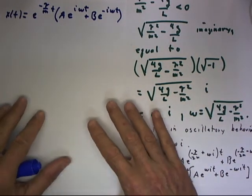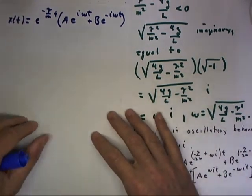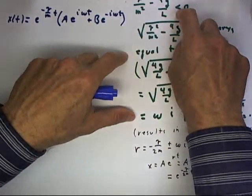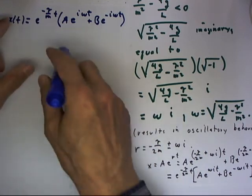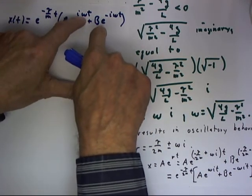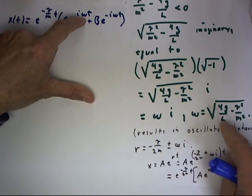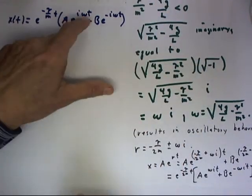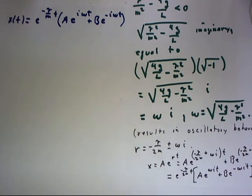Okay, here again is our solution when the discriminant is less than zero. We can reduce the solution to this where omega is simply the square root of the negative of this term. Omega being interpreted as the angular frequency of an oscillation.